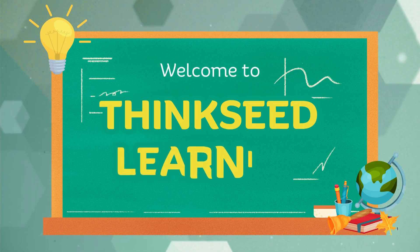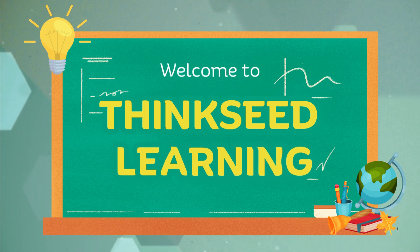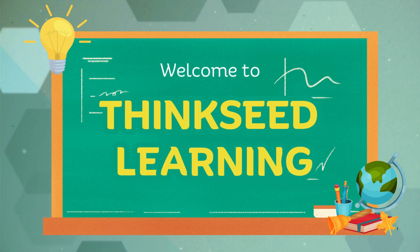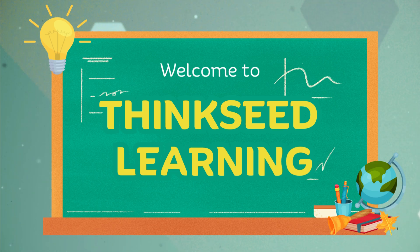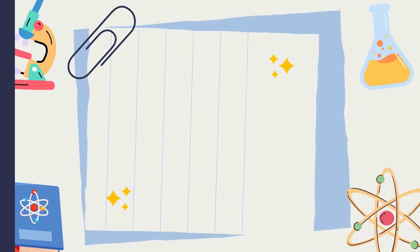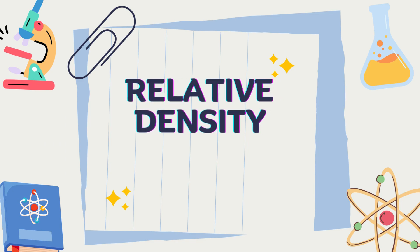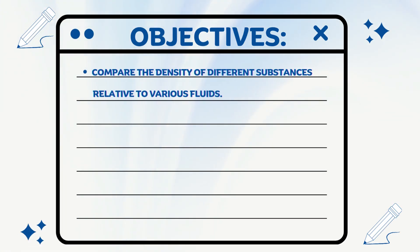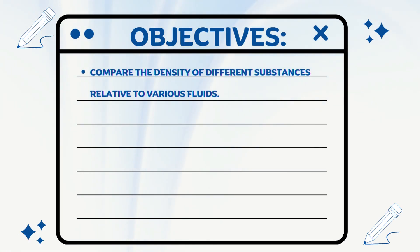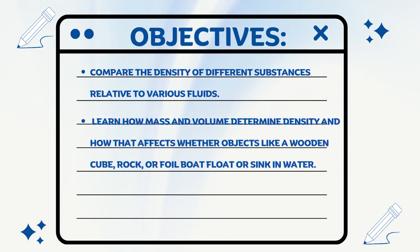Welcome to ThinkSeed Learning. Our topic for this video is relative density. We'll explore why some objects float while others sink. You'll learn how mass and volume affect density, and see real examples like a wooden cube and rock, oil and water layers, and a foil boat floating with metal marbles.